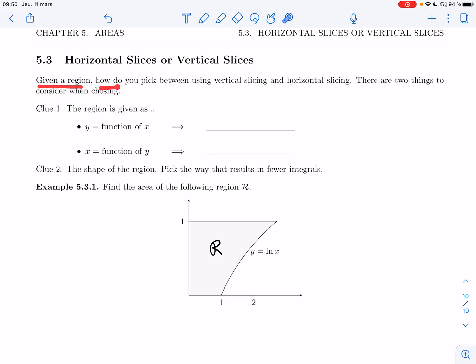So given a region, how do you pick between using vertical slicing and horizontal slicing? When you have to pick, when I'm not forcing you to use one or the other,